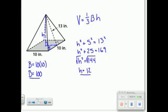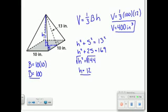We plug in both into the volume equation. So the volume is one-third, 100 times 12. One-third of 12 is 4. 4 times 100 gives me 400 inches cubed for the volume of the pyramid.